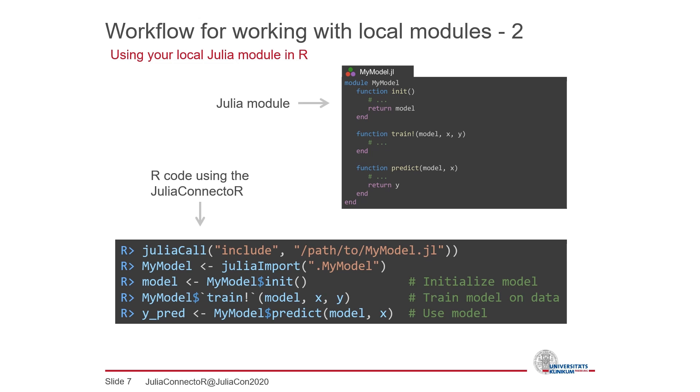Loading a module is done with the include function in Julia. We can call this function in R via the Julia call function, which allows to call any Julia function by name. With that we can load the module definition from the source file. The automatic import of the functions from the module works then as well as with the packages, and we can use all functions in our module in R.